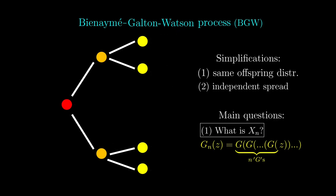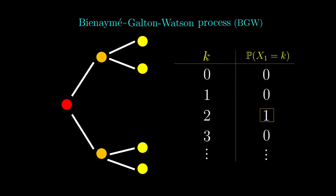As a sanity check that this is correct, let's suppose there will always be two branches, which means that the offspring distribution looks something like this, where the probability that x1 equals 2 is 1, and all the other probabilities are 0. This means the generating function is z squared. By iterating it n times, the generating function for the nth generation is z to the 2 to the n, meaning that the number of individuals in the nth generation is 2 to the n, which is what we expected.